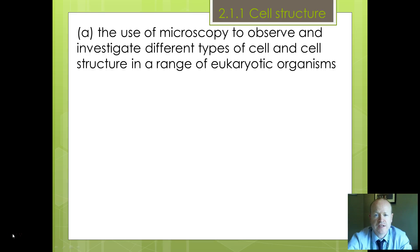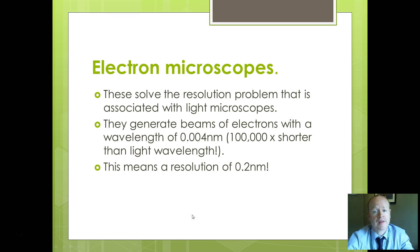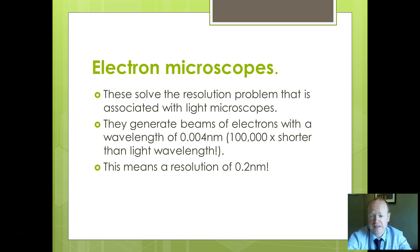Welcome back to OCR A-level biology, 2.1.1 cell structure. We've been looking at microscopy and we continue to look at electron microscopes. Electron microscopes were developed to solve the problems of resolution with light microscopes. They use a beam of electrons instead of light, with a wavelength of 0.004 nanometres — about 100,000 times shorter than light — giving a resolution of 0.2 nanometres.